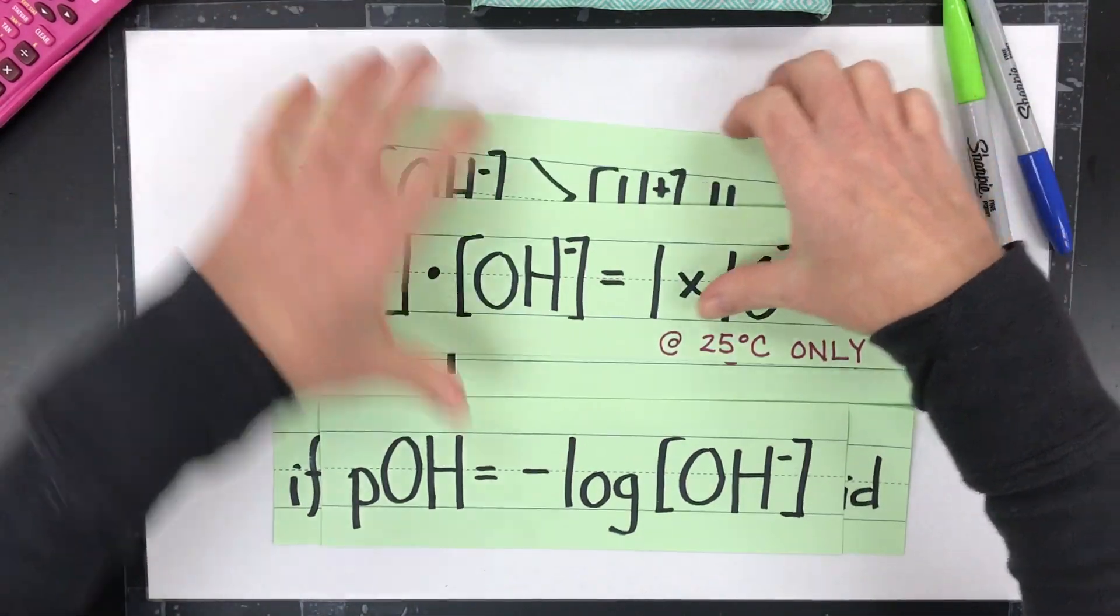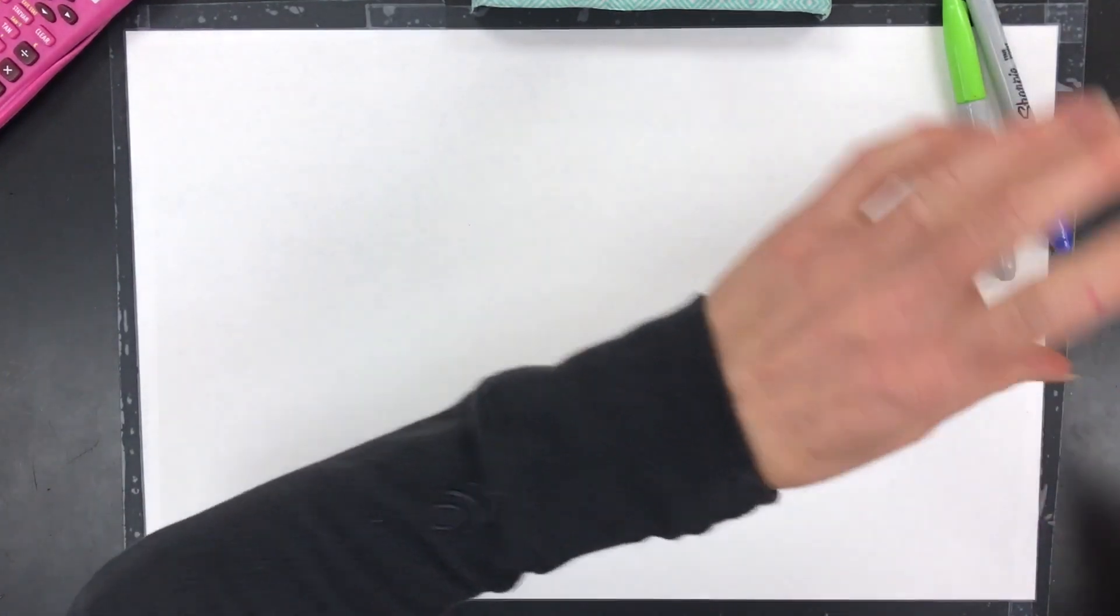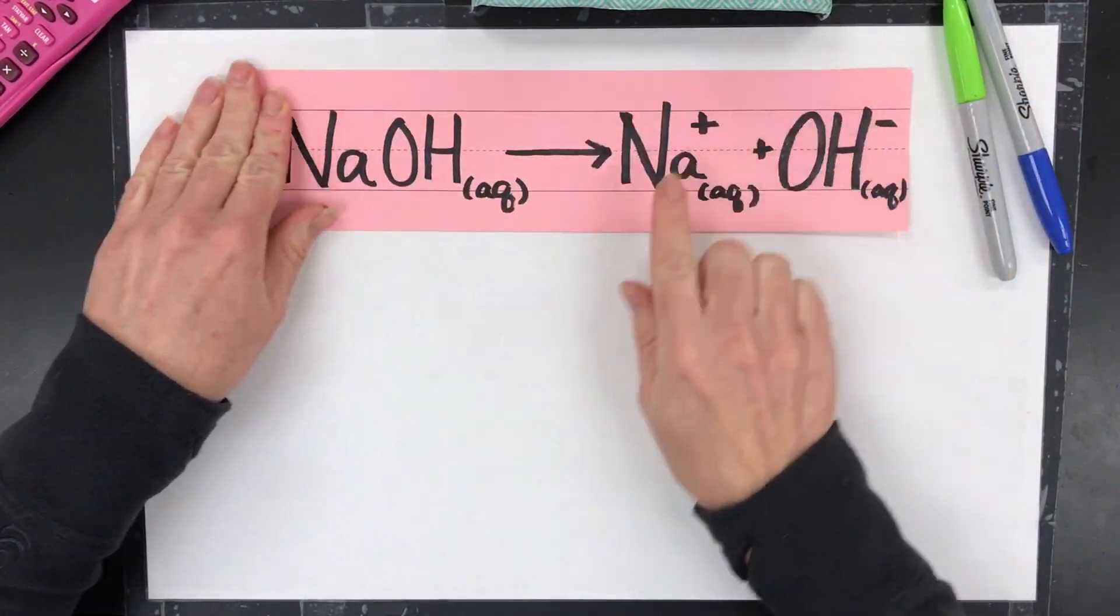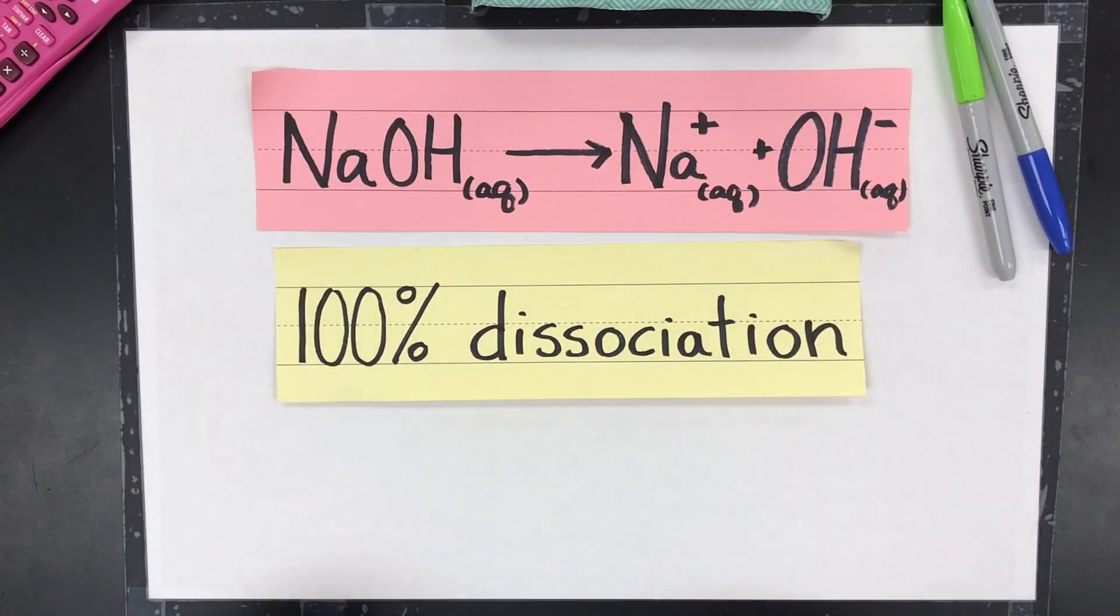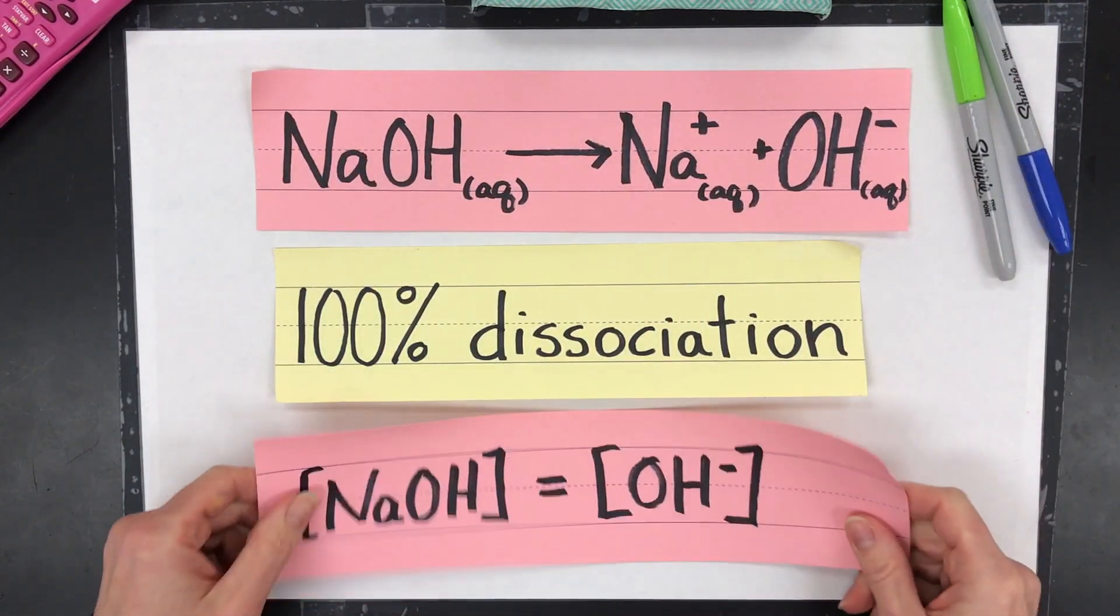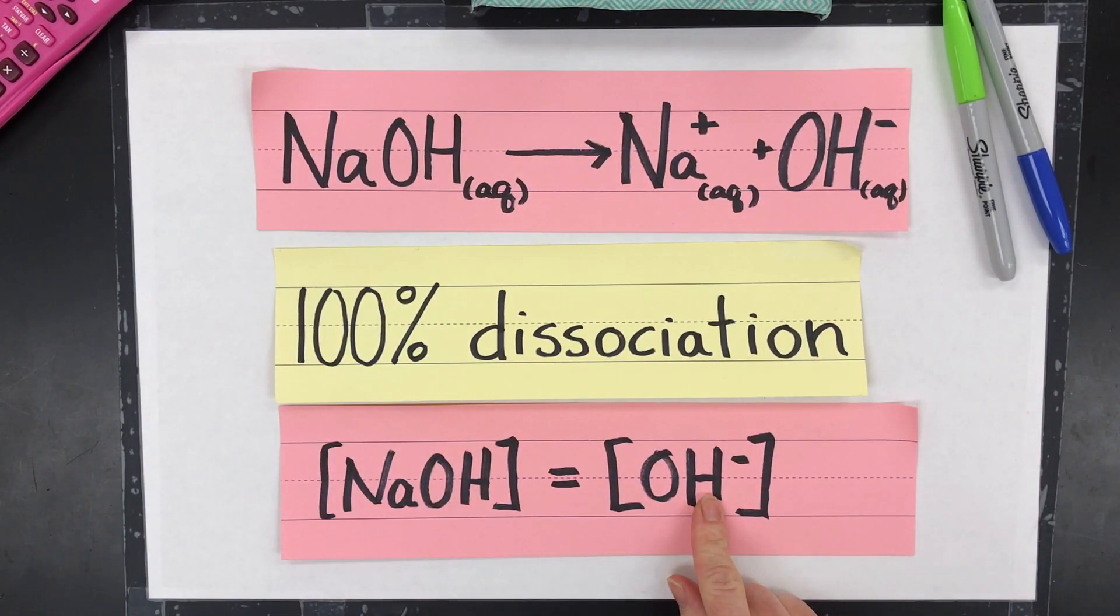Let's make sure we understand what it means to be a strong base. Now we know who they are and the formulas to use. So sodium hydroxide is a strong base. It'll produce sodium ions and hydroxide ions completely. So that means it's going to have 100% dissociation. Because of that, the sodium hydroxide concentration will equal the hydroxide concentration. So the sodium hydroxide concentration will be the same as the hydroxide because all of it makes products.